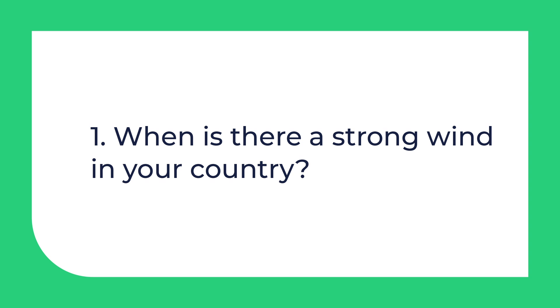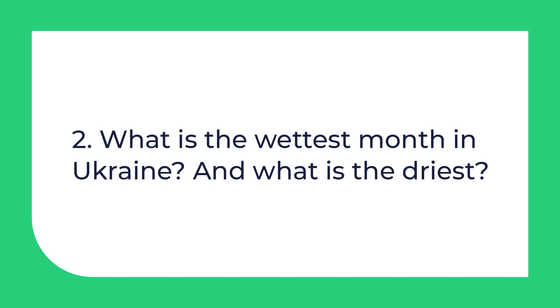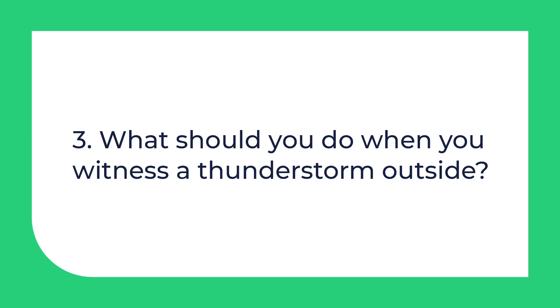Now you should be wondering how to describe the climate in different countries. Now you know how wet and dry seasons, desert and semi-desert differ. Pause the video and answer the questions. Say your answers. Question 1: When is there a strong wind in your country? Question 2: What is the wettest month in Ukraine, and what is the driest? Question 3: What should you do when you witness a thunderstorm outside? Remember the words and think about the climate in South Africa and in Canada in your free time. Thank you very much. Bye!